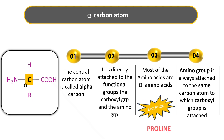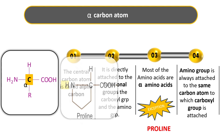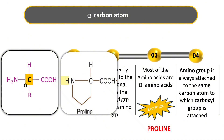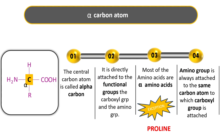The exception is amino acid proline. In proline, the side chain is cyclic and loops back to join the amino group. So instead of a normal NH₂ group, proline has only one hydrogen on nitrogen — it does not have a typical free NH₂ group attached to the alpha carbon. That is why proline is not an alpha amino acid, whereas most other amino acids are.